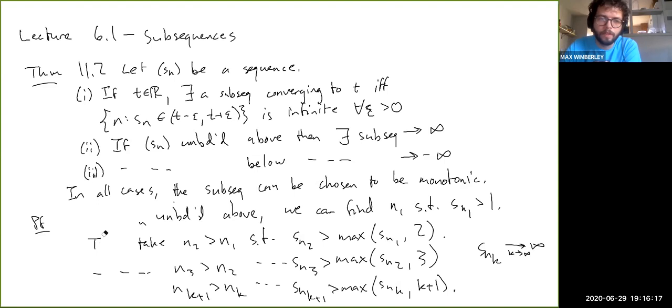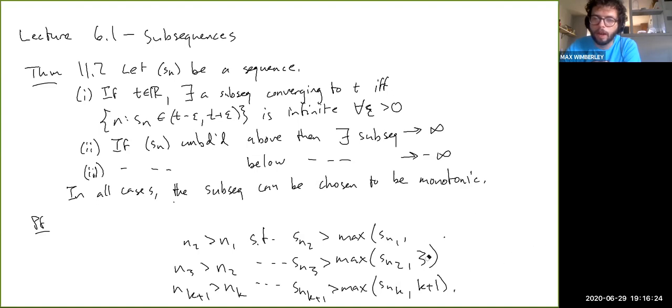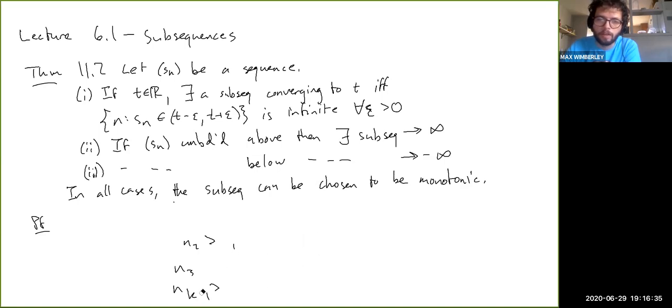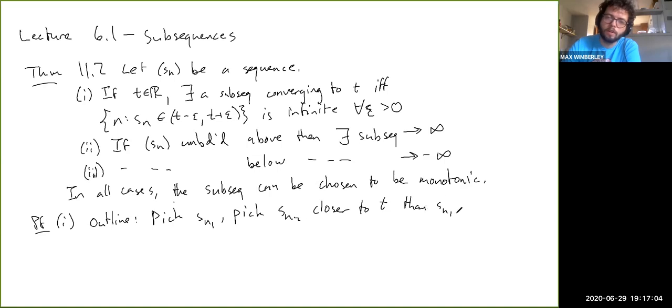And then take N3 bigger than N2 such that SN3 is greater than the maximum of SN2 and 3, right? And just keep doing that. Take NK plus 1 greater than NK. So we do this kind of inductively. That's how you describe this definition. It's an inductive definition. SNK plus 1 is greater than the maximum of SNK and K plus 1, right? Then clearly this subsequence will go to infinity. So SNK will go to infinity as K goes to infinity.